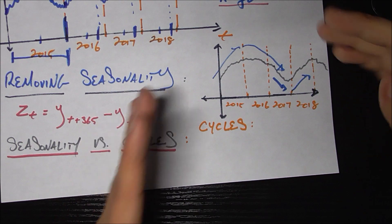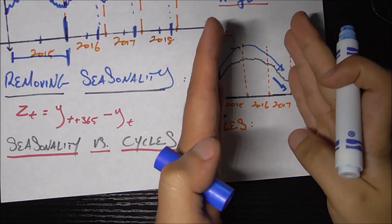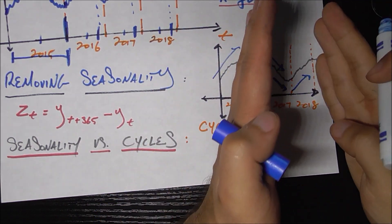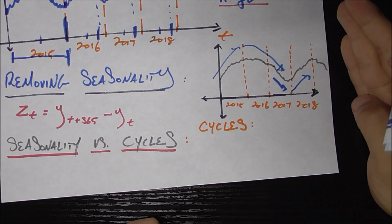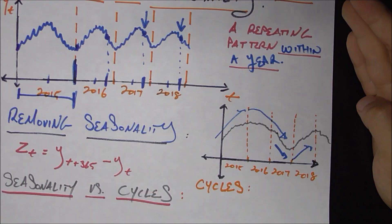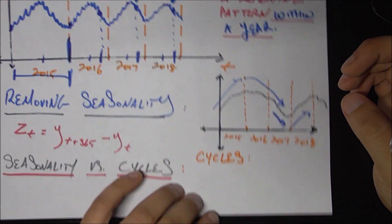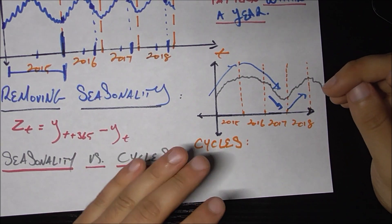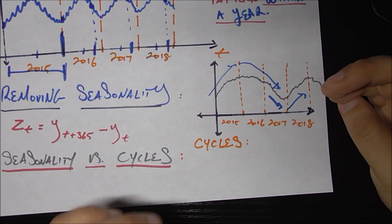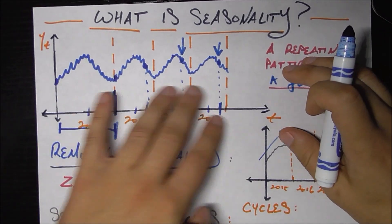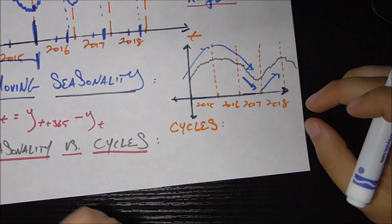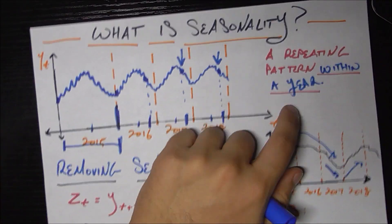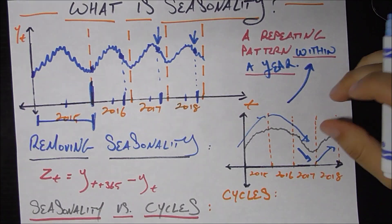The other thing about cycles is that they're not really predictable. So the first cycle here took about two and a half years. The next cycle here took about maybe one or one and a half years. So cycles are also components of time series, which go up and down over time. But the distinction between them and seasonal components is that cycles are not as predictable as seasonality would be. And they generally take place over the course of years rather than within a year.